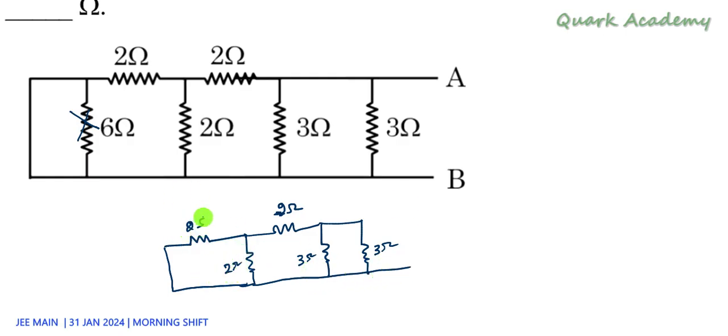If you look at this, these 2 ohms are in parallel, and if they are in parallel their effective resistance is going to become 1 ohm. Instead of these 2 resistors which are in parallel, I can replace them with 1 ohm. Let me do that.